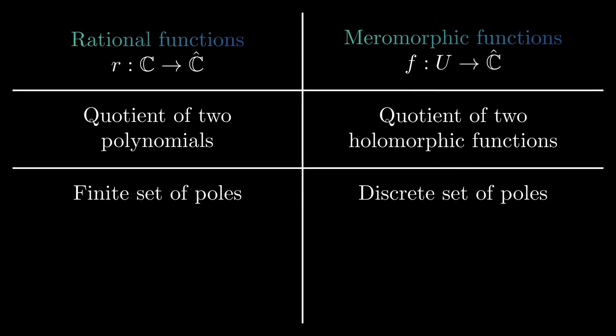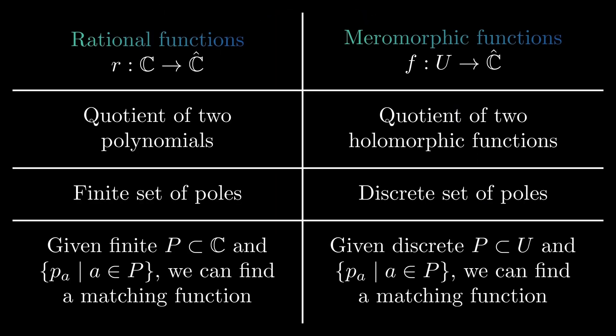Given a finite set of points and for each point some principal part, we can find a rational function which has exactly poles with the matching principal parts. The same property holds for meromorphic functions when we replace finite by discrete. This is known as the Mittag-Leffler theorem.